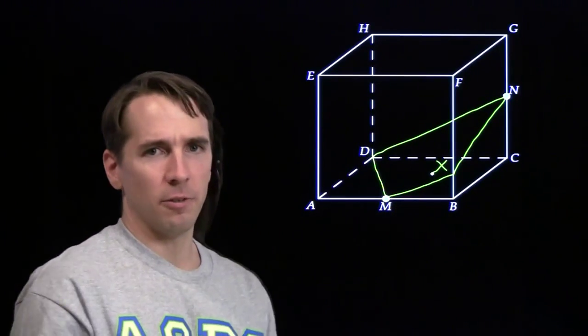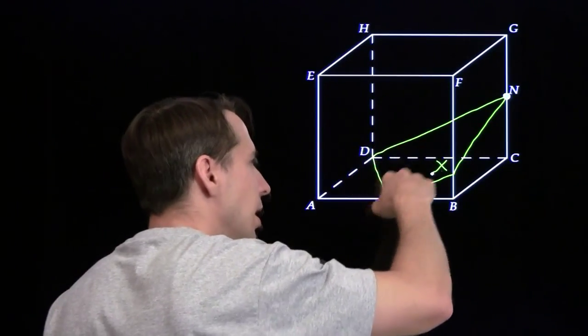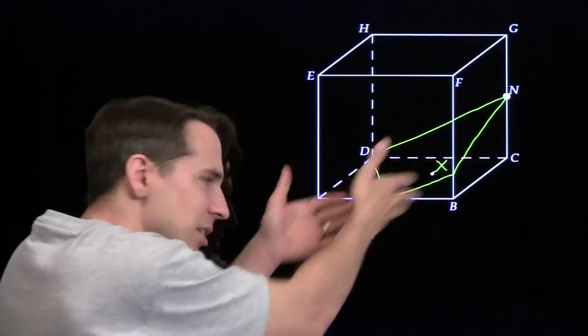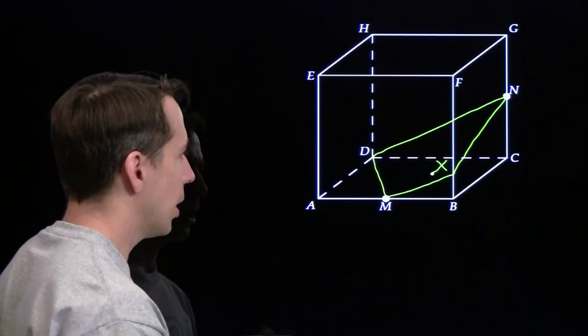Now if this piece down here is a frustum, that means that these three edges, DM, NX, CB, we extend these out in the lines, they're going to go through a common point. Well, do they go through a common point? That's what we need to check.